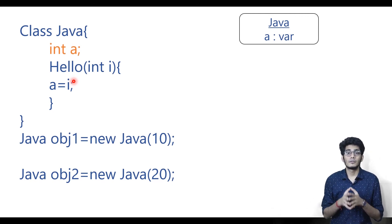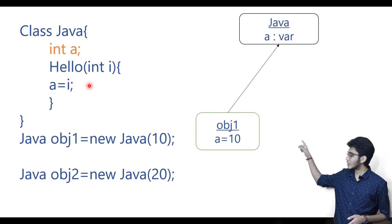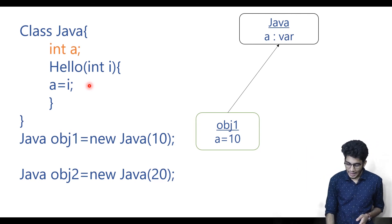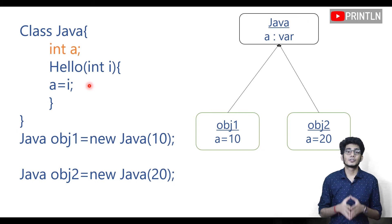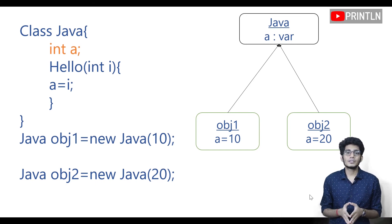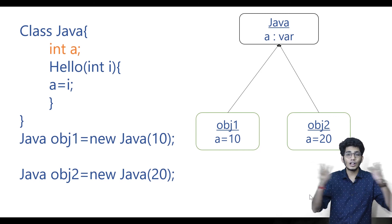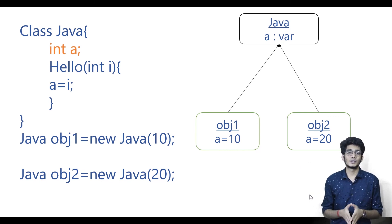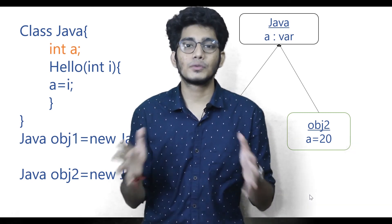In the JVM, two separate memory spaces will be created for variable 'a' — one for obj1 and one for obj2. For obj1 the value of 'a' is 10, and for obj2 the value of 'a' is 20. If you change the value of 'a' for obj1, it won't impact the value of 'a' for obj2, because those memory spaces are separated.